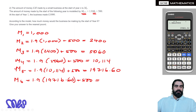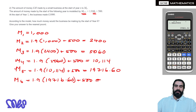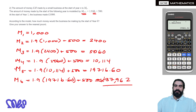Then M6 is 1.9 times 19716.60 plus 500. To the nearest pound, because we want it to the nearest pound, that is approximately £37,962, which is your solution for that one.